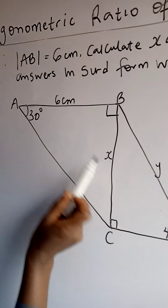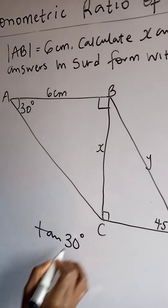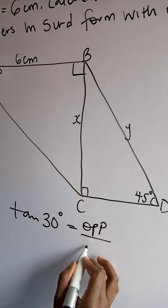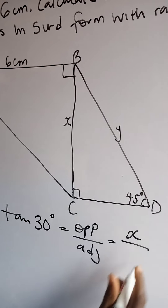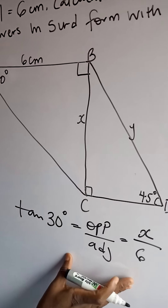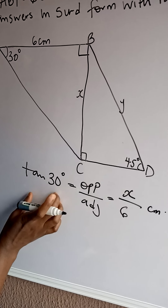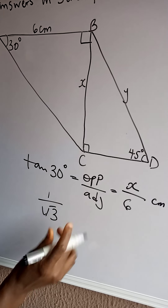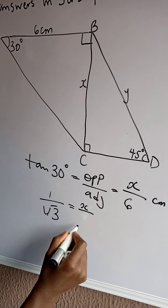Because we are given the opposite and the adjacent, we are using tan 30 degrees, which equals opposite over adjacent. The opposite in this question is X, and the adjacent is 6 cm. So tan 30 degrees equals X over 6. From our previous video, tan 30 equals 1 over root 3, so 1 over root 3 equals X over 6.